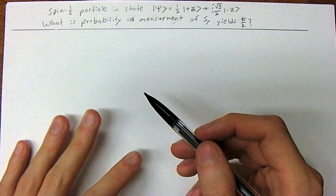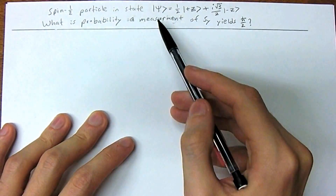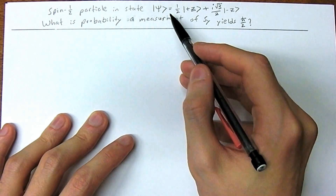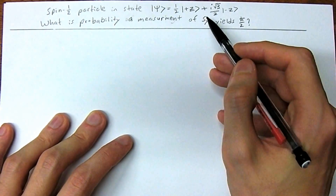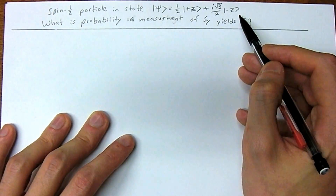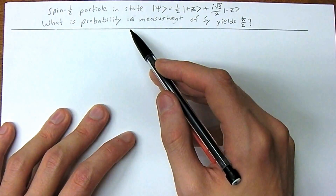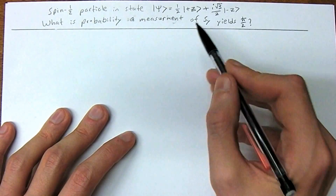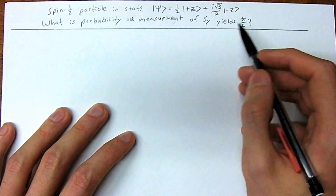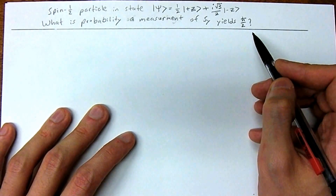Keeping with the same example as before, we still have a spin-1/2 particle in state |ψ⟩ = (1/2)|+z⟩ + (i√3/2)|−z⟩. Now we want to find the probability of measurements of S_y using an S_y device, so S_y yields ℏ/2.